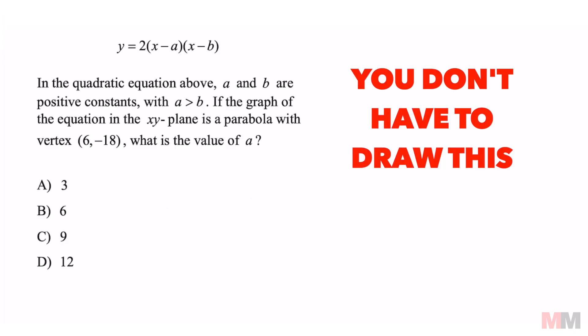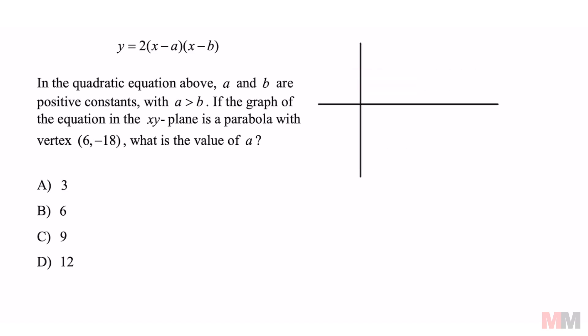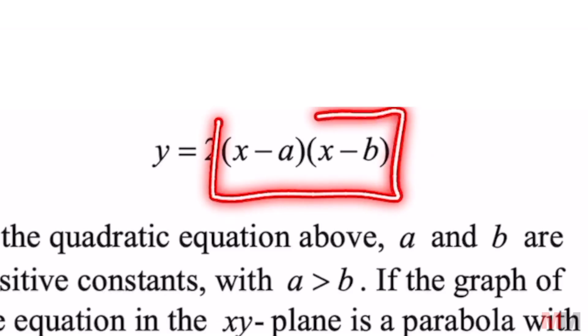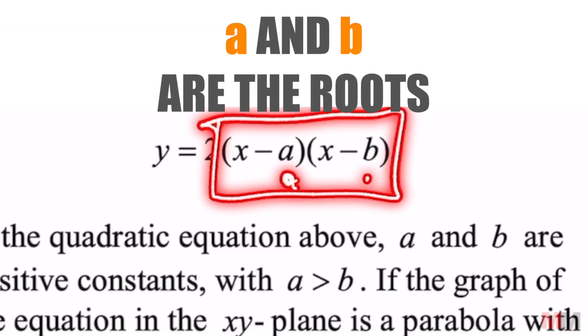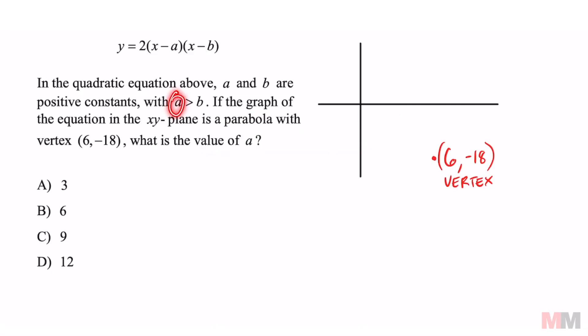You don't have to draw this, I just want to explain this better. Here's a quick sketch of what's going on in this problem. We got a vertex at (6, -18). Since this is in its factored form, it is telling us that a and b are my roots, where a is more than b. So those points are going to go somewhere over here. A is more, so that one's a, b is somewhere on the left side, and now we got our parabola.